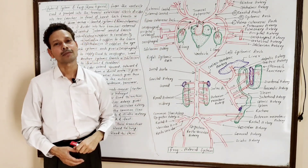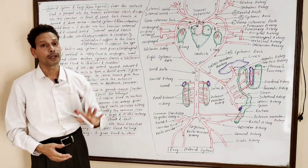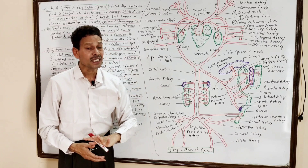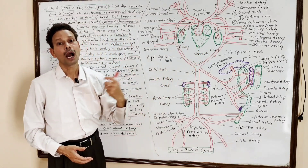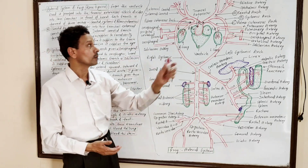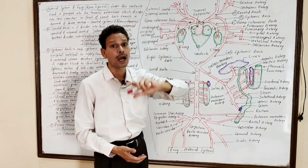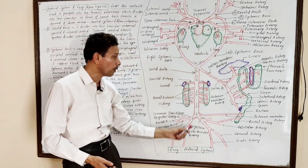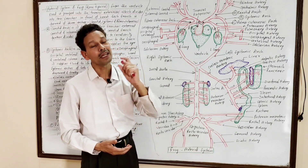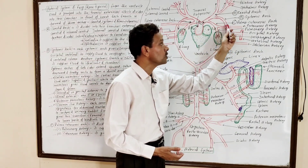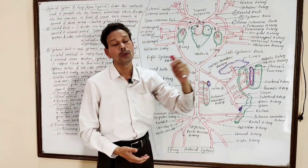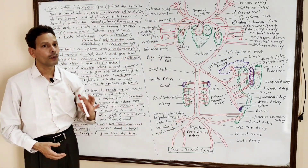This is all about the arterial system of frog Rana tigrina — a very important topic for all BSc second year fourth semester students and a final exam topic. In summary, the heart pumps blood through the truncus arteriosus, which bifurcates and each branch gives three main arcs: carotid arc to the head region, systemic arc to all body parts, and pulmo-cutaneous arc — with branches being cutaneous artery to skin and pulmonary artery to lungs.